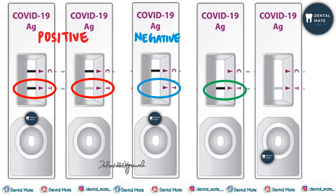What we need to remember is that the control line first of all has to be darkened. After that only can we infer the patient as positive or negative. If the control line is absent or faint, then the kit has to be regarded as invalid.